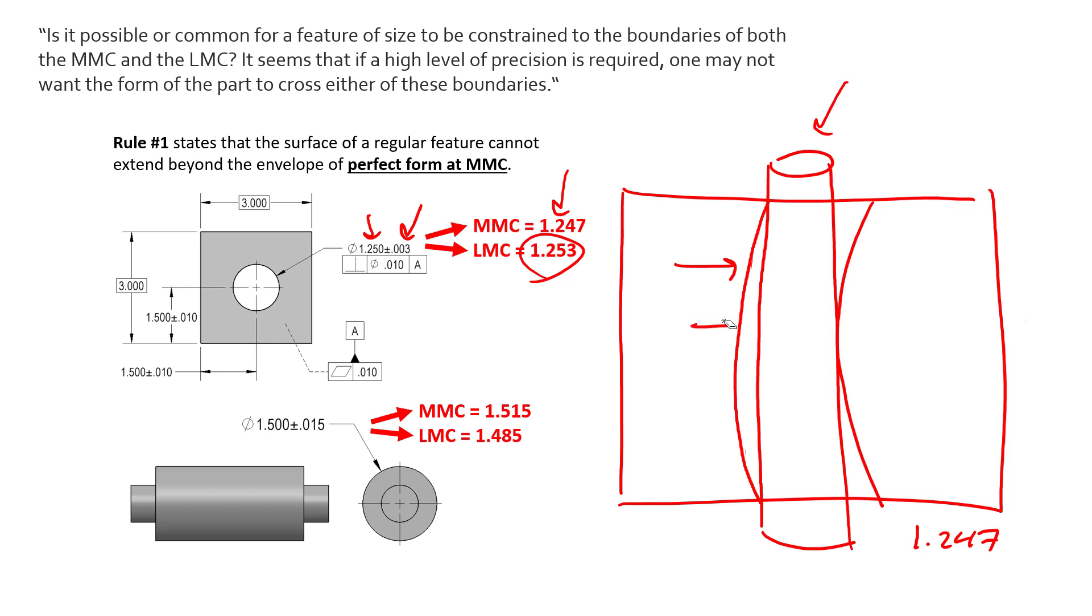to have zero form error if they want to assemble appropriately. If we didn't have this rule, we would say that this could measure diametrically at MMC and have all sorts of wonky form error, but that would never assemble.